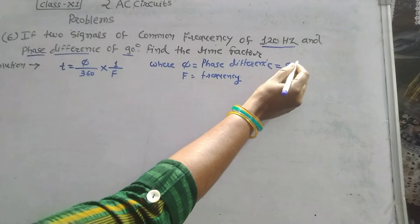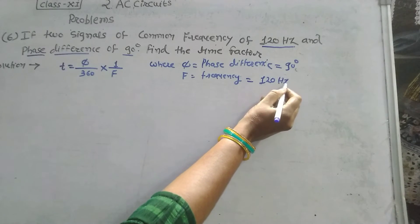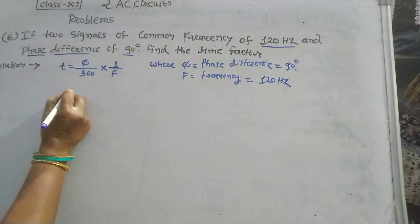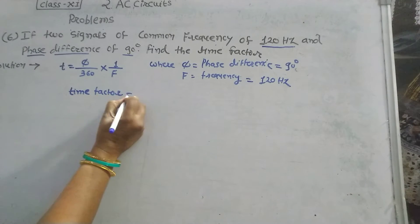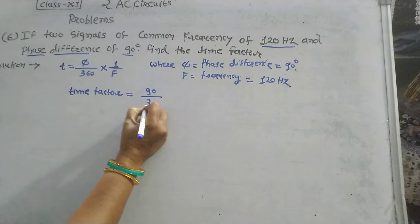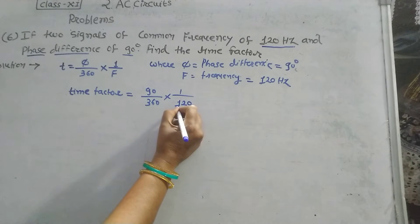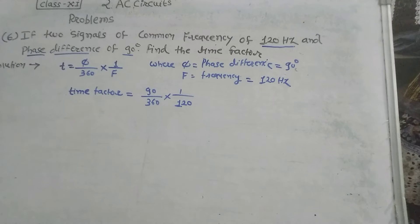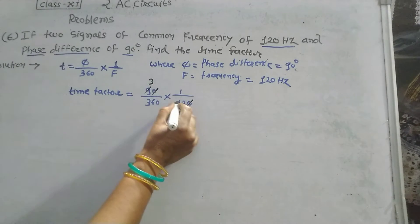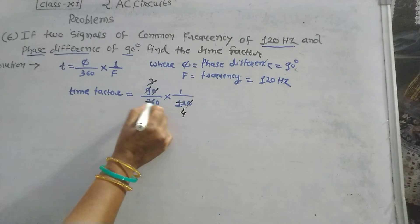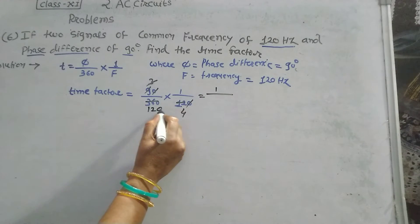The phase difference is 90 degrees and frequency is 120 hertz. Substituting values: time factor equals 90 divided by 360 into 1 upon 120, which simplifies to 1 upon 120 into 4.